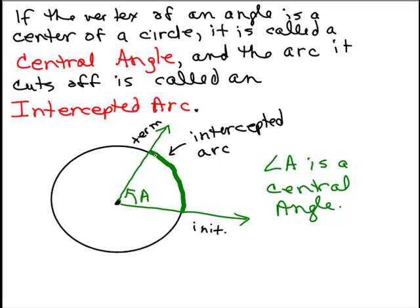The arc it cuts off, that's this thick green part here, is called the intercepted arc. It's like where does the angle intersect the circle? It's only intersecting here and here, but it's the part on the circle between those two points that is the intercepted arc.